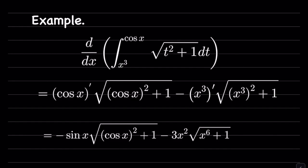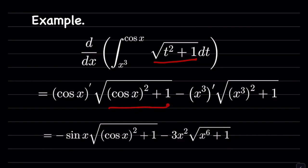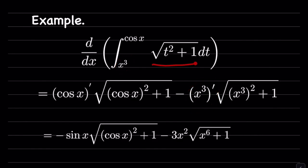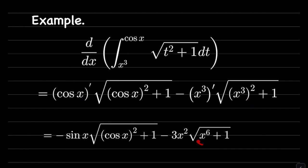Let's look at another example. We would like to differentiate this function. The derivative is going to be the derivative of the upper bound — derivative of cosine — multiplied by this function, but t replaced by the upper bound. If you replace t by cosine x, you get cosine x squared plus 1. Then minus the derivative of the lower bound, multiplied by this function but t replaced by the lower bound, which is x cubed. Simplifying: derivative of cosine is minus sine, and derivative of x cubed is 3x squared, and x cubed squared becomes x to the 6 plus 1.